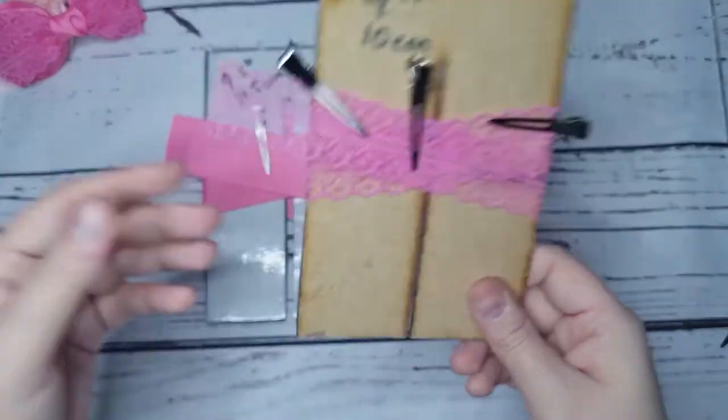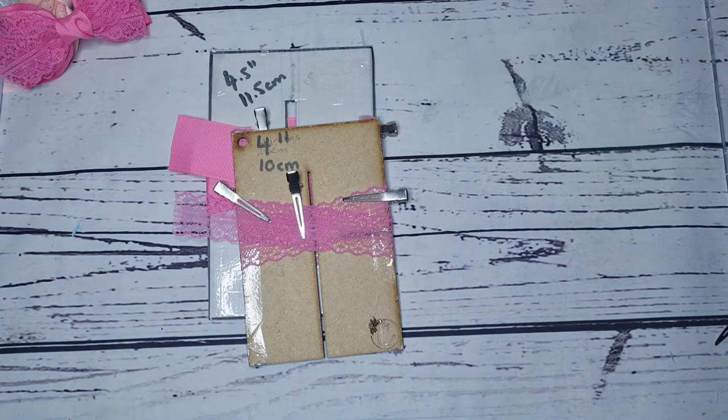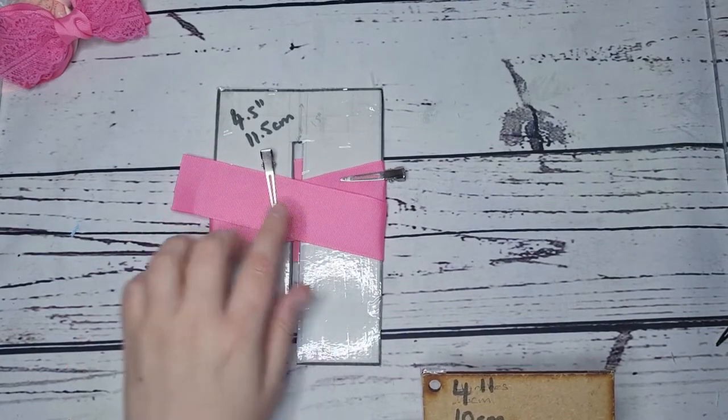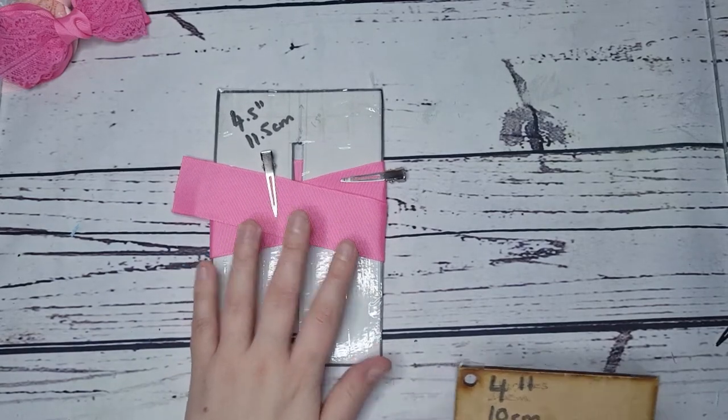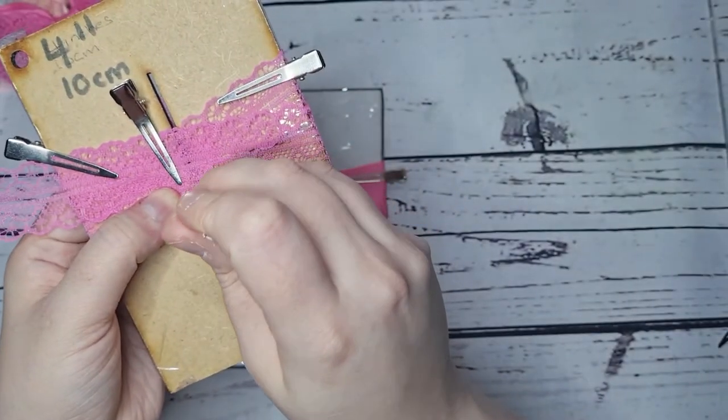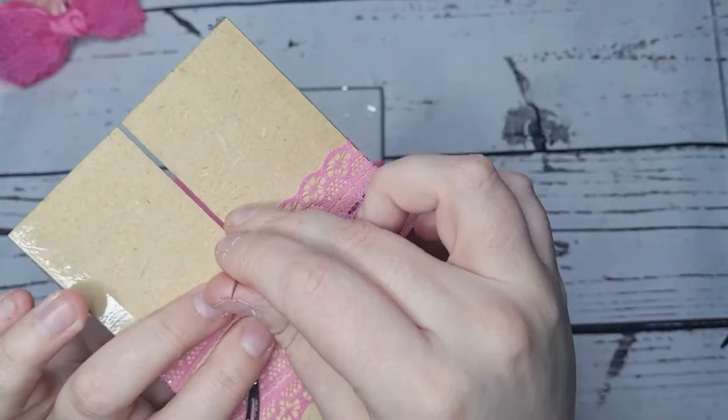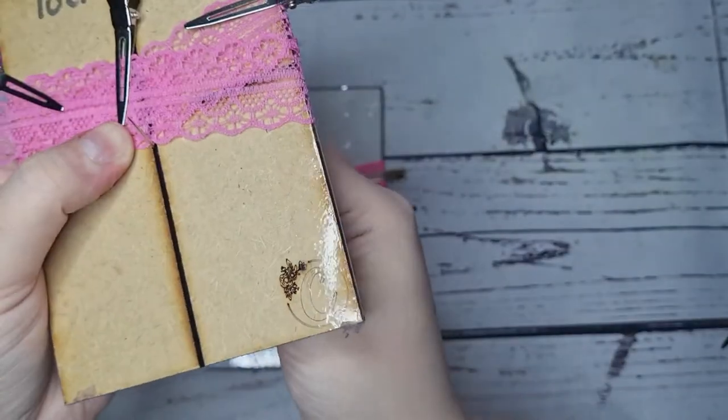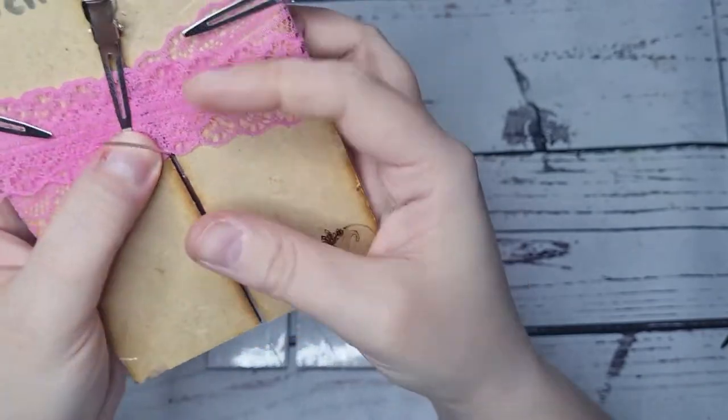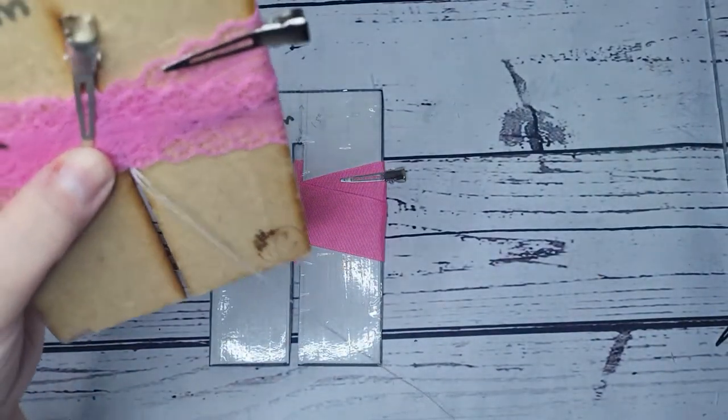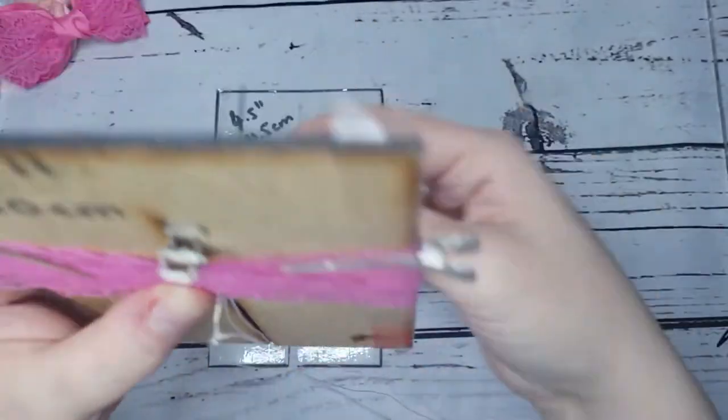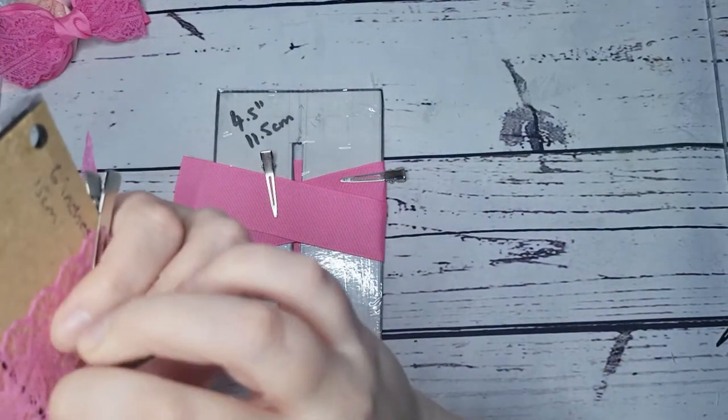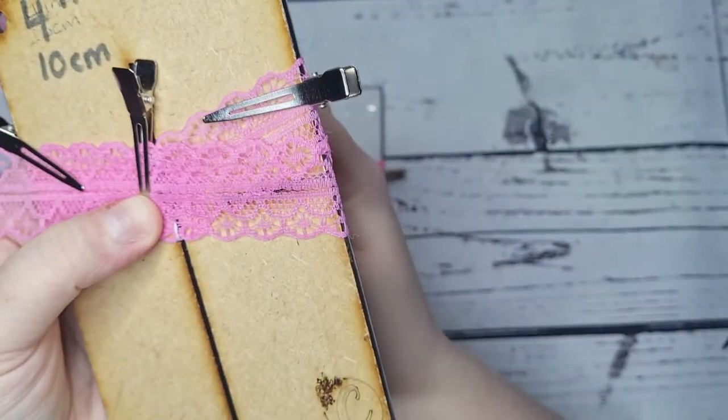We're going to do exactly the same stitch placement on both bows. From above you want to go where the edge starts - that's one. Back up just before the overlap, so just where those are joining - that's two. Three is just over, make sure your lace is still overlapped. Just before it overlaps is four.